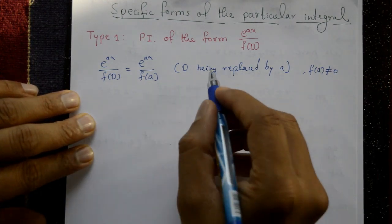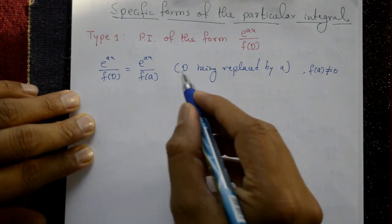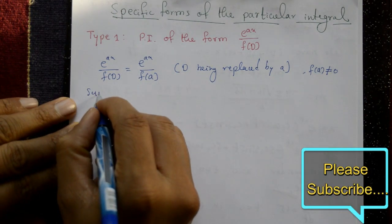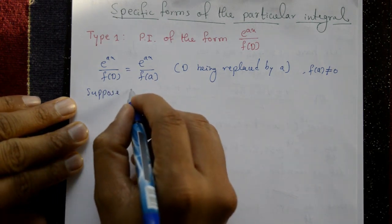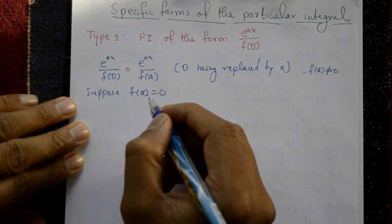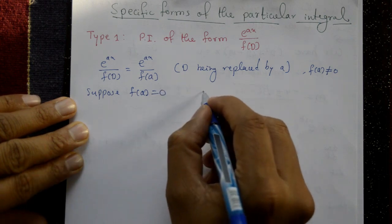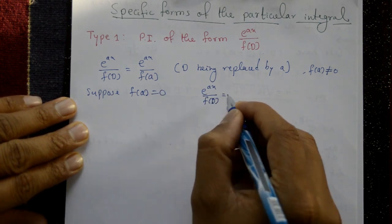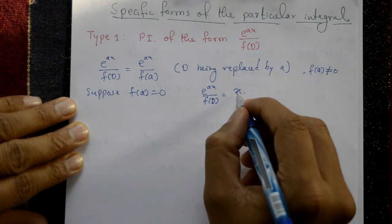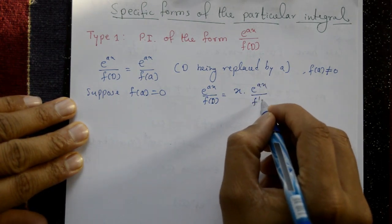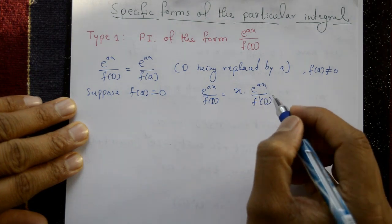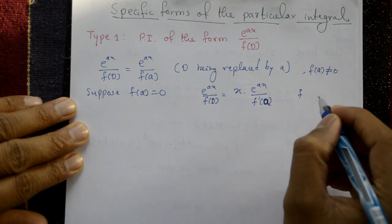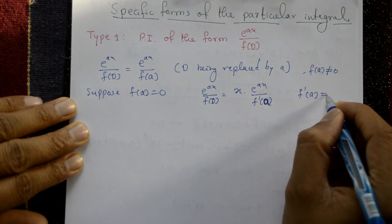If f(a) is not equal to 0, put D equal to a, and the denominator is not equal to 0. But suppose f(a) equals 0 — then: e^(ax) / f(D) equals x · e^(ax) / f'(D), evaluated as x · e^(ax) / f'(a), provided f'(a) is not equal to 0.